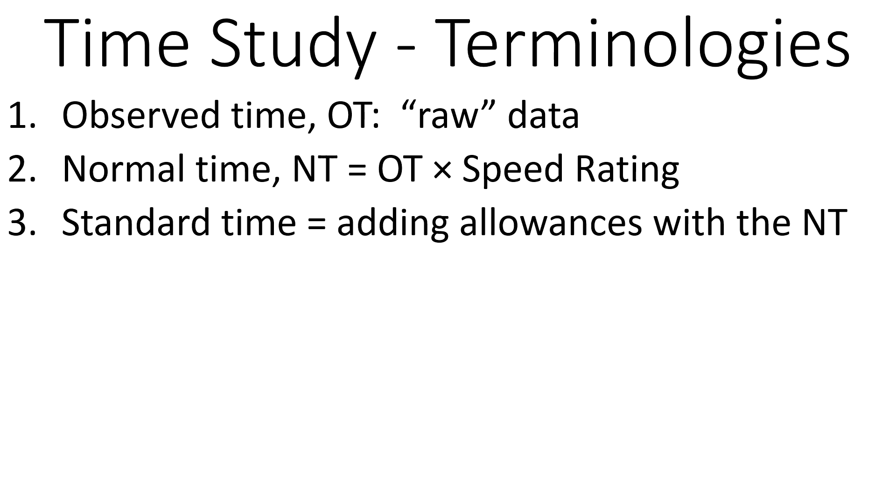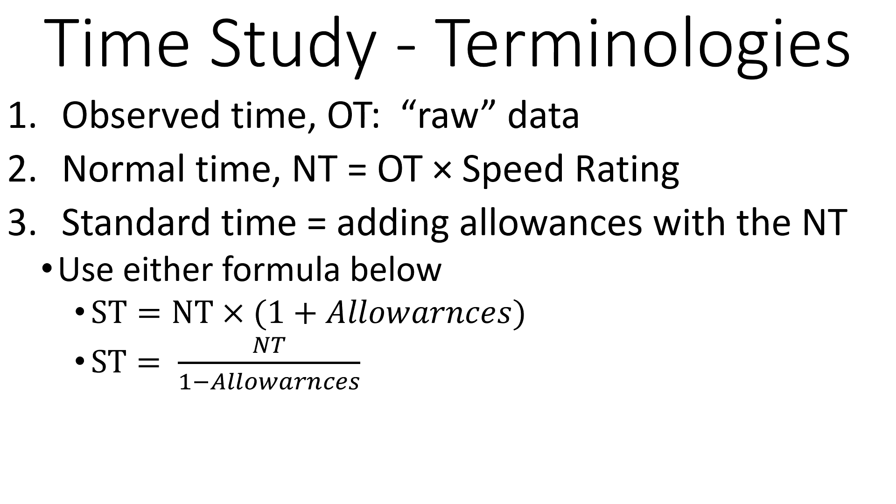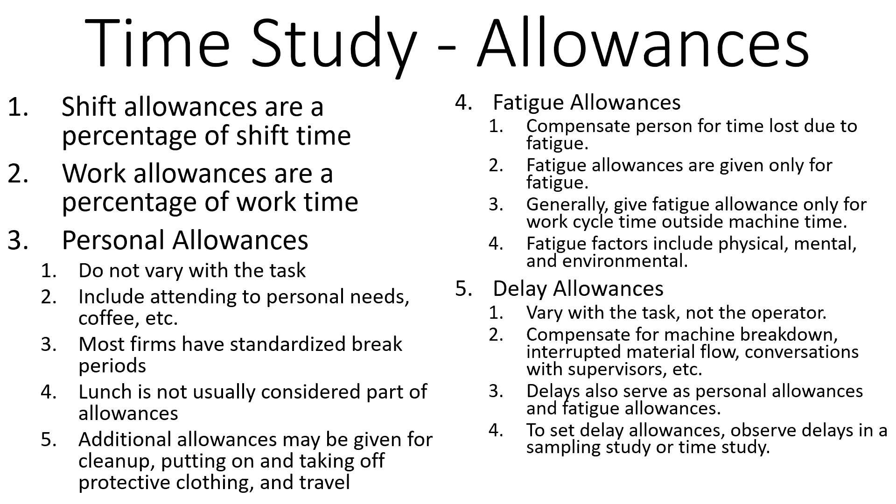We'll see examples for this, how to do all these calculations. Once we adjust it for the speed rating, then we need to add the allowances - people need coffee breaks, things like that. We have to account for that as well. We can use these two formulas; either of them is fine. The second one is more preferred. We'll see an example soon for all these calculations.